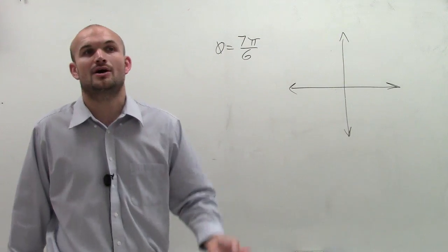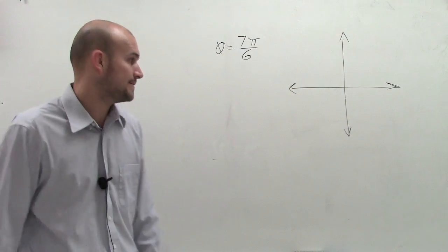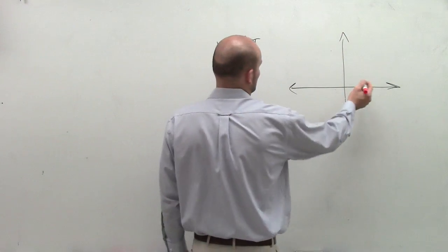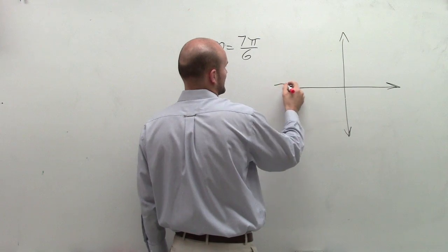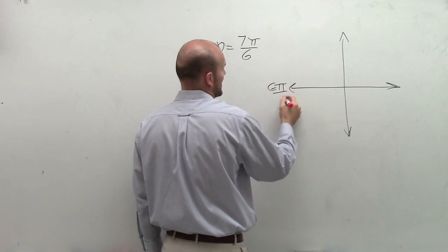So the first thing we need to do is we need to know how to graph 7π over 6, right? So if I know here's my initial side, here's my, well, I don't know where my terminal side is, but if here's π, then that's 6π over 6.